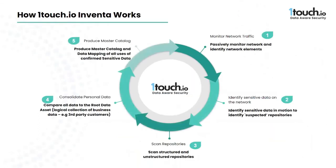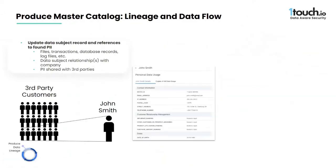Inventa catalogs and organizes all of this managed PII data, including all the copies and partial copies of the data, to be available for data subject access requests, security audits, and other risk management and privacy purposes. Once John's data has been associated with the third-party customer grouping and confirmed as managed PII, Inventa organizes this data around the grouping, the individual, the repositories where it's found, and the type of data that was discovered.